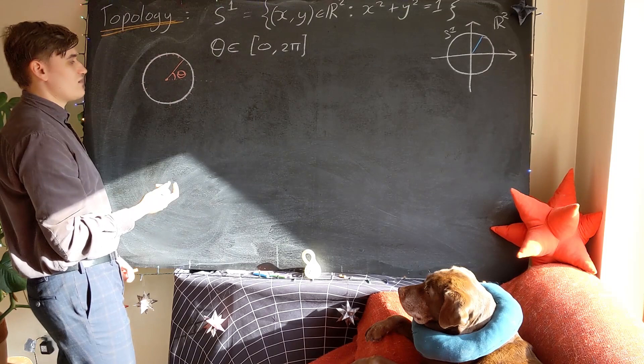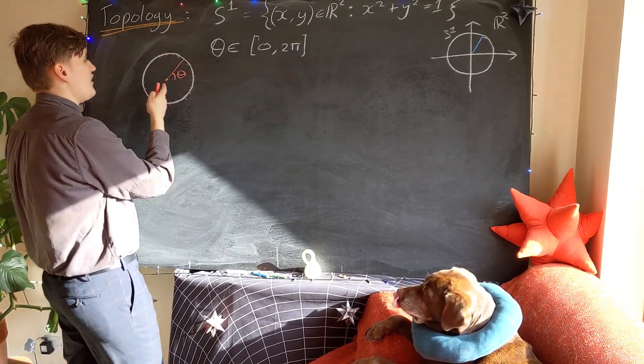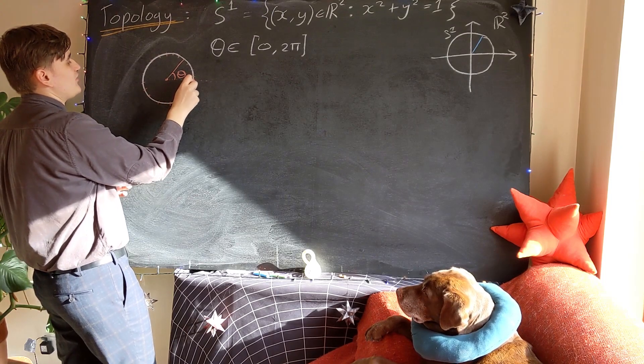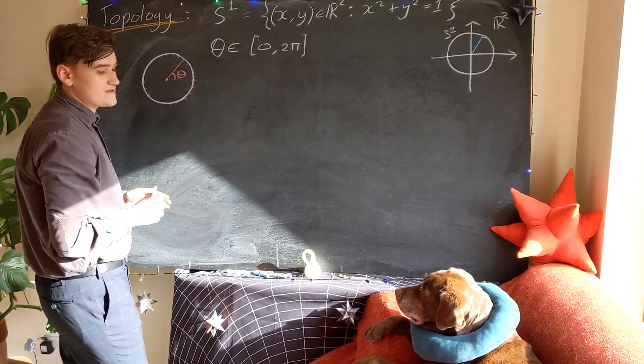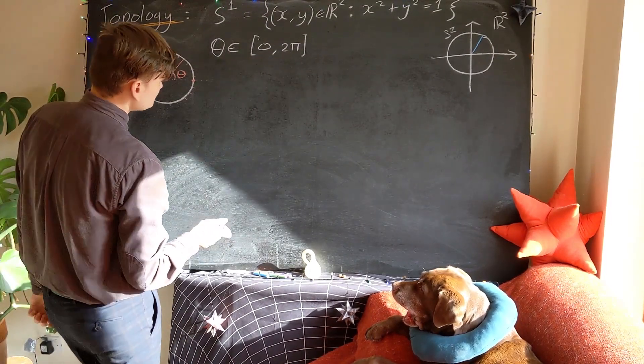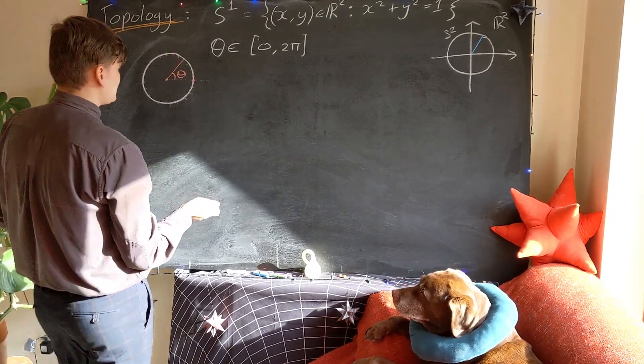However, we have to be careful now because we should realize that the points 0 and 2π, if you go all the way around the circle, you arrive back at this point. So, the points 0 and 2π should, in some way, be the same point.